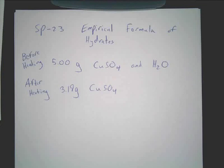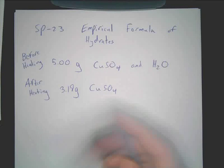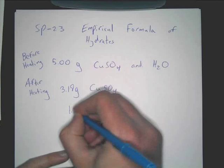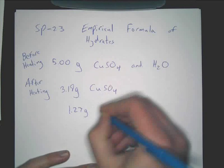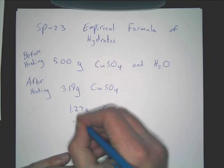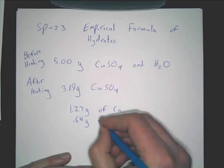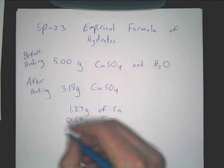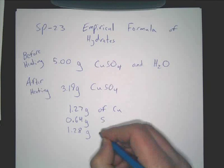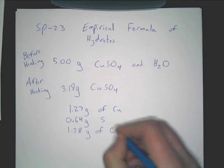I'm going to give you a breakdown of the three chemicals that are left. This part would not be expected of you — we're not going to do this in a lab. But in that 3.19 grams, you have 1.27 grams of copper, 0.64 grams of sulfur, and 1.28 grams of oxygen.